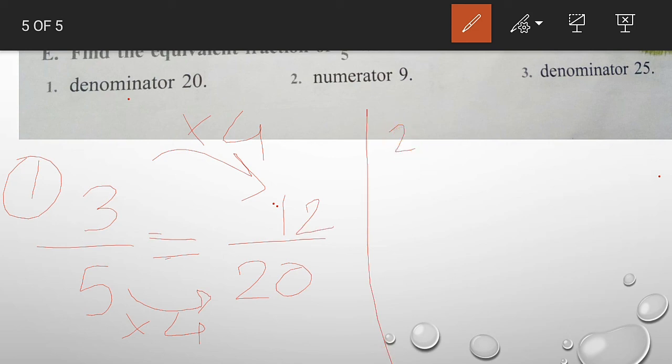Second number, we want numerator as 9. First we write 3 by 5 is equal to numerator 9. Now we want to find denominator. Here we have numerator 3.